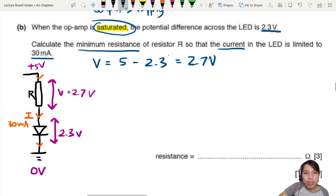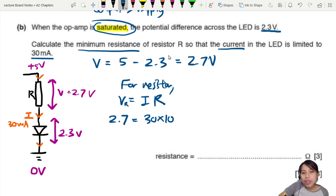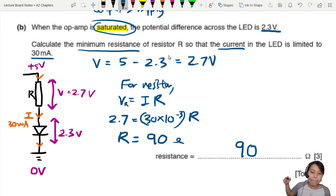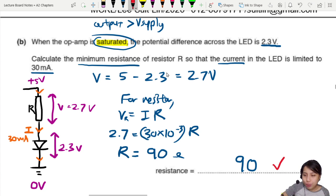For the resistor, we know V equals IR, which is Ohm's law. We know now that the potential drop across the resistor is 2.7, so current will be 30 milliamps, and we can find the resistance of the resistor. This should give us 90 ohms. Three marks. This question has a bit of trap here and there. Final answer is one mark.